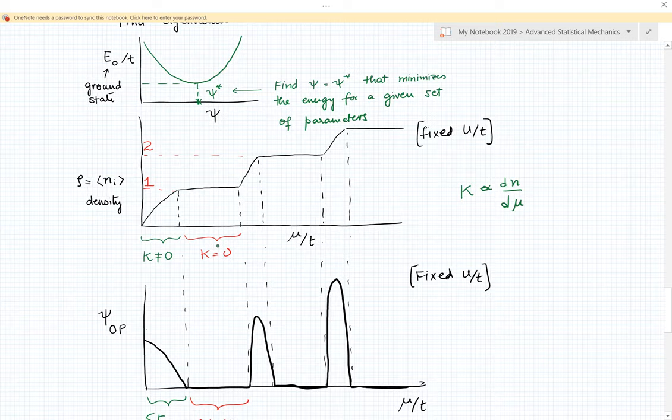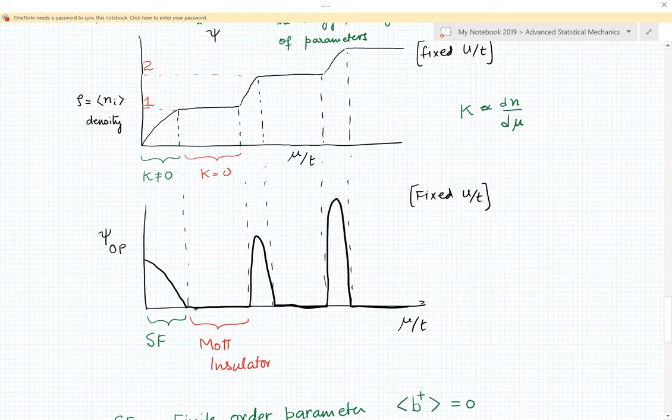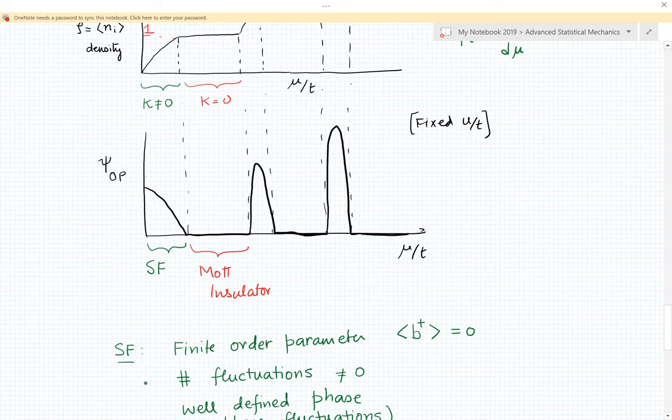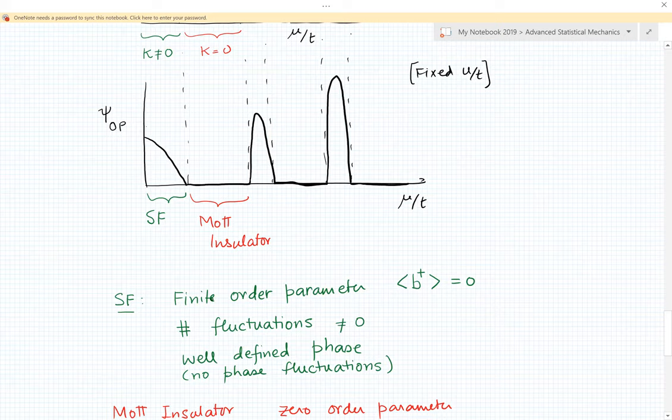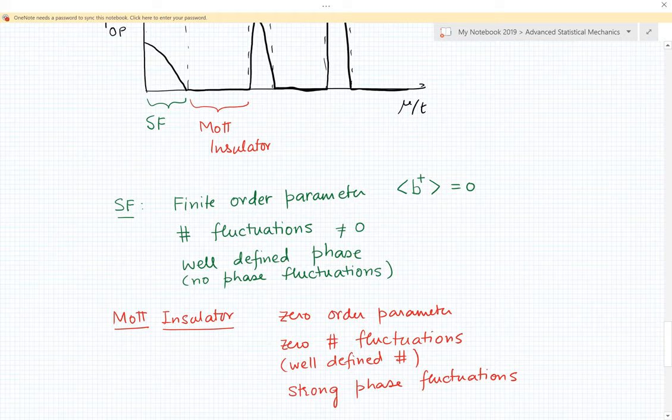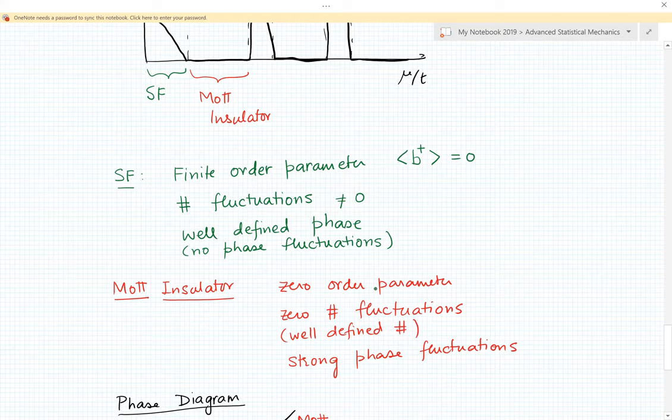Corresponding with that, the order parameter as a function of mu over t is finite in these regions where the density is changing and becomes zero in the regions where the density takes on integer value. What we define as the superfluid phase is that region where the order parameter is finite, so psi is non-zero. You can see that also indicates that these regions have number fluctuations and that's why the compressibility is non-zero. It has a well-defined phase so there are no phase fluctuations. On the other hand, the Mott insulating regions are those where the order parameter is zero. It has a well-defined number so there are no number fluctuations, but it has the conjugate variable the phase shows strong fluctuations.